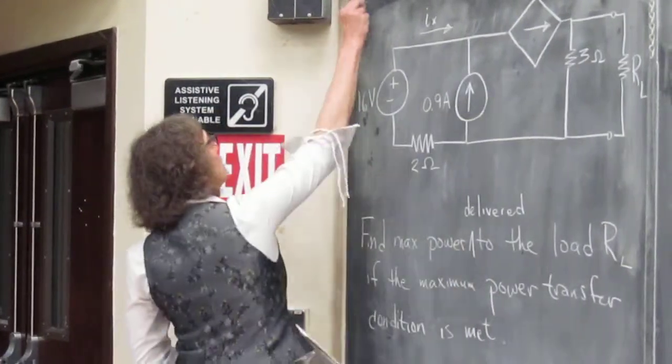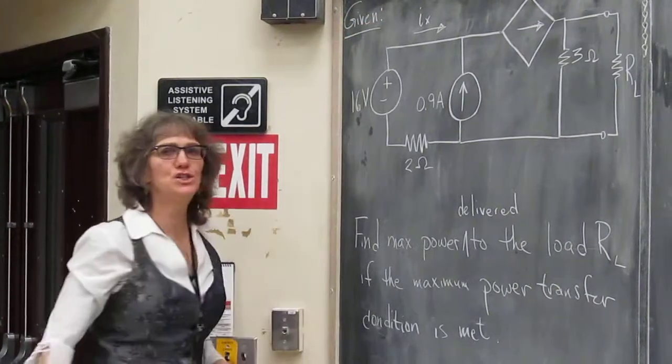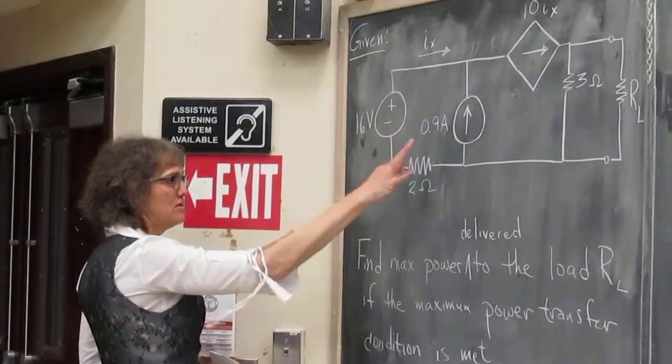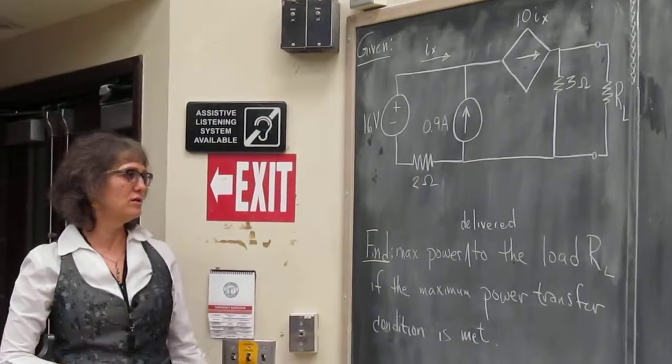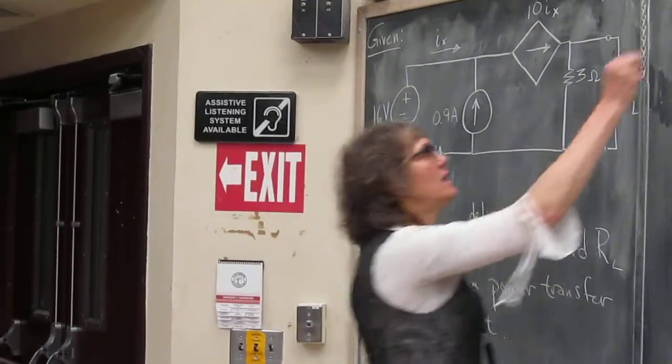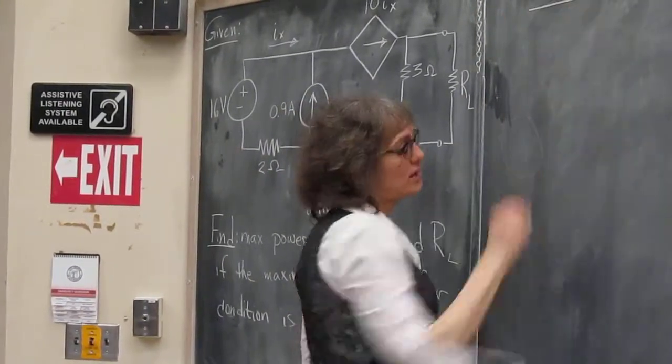Did I miss the word delivered? I suppose you don't really need it, but I think it makes it more clear. If the maximum power transfer condition is met. Okay, so that's the problem. So you know, if you're going to do this in the standard format of professional engineering solutions, you would say, okay, this is the given, this circuit, and then this is what you're being asked to find, specifically. The maximum power delivered to the load, if the maximum power transfer condition is met. And then you want to label your solution.